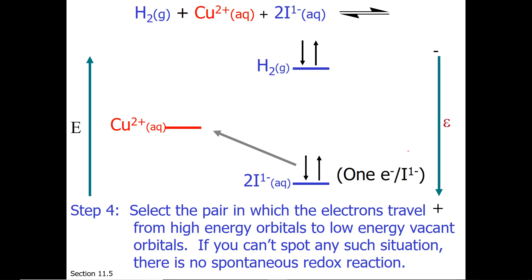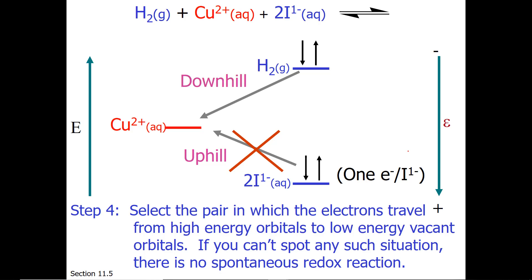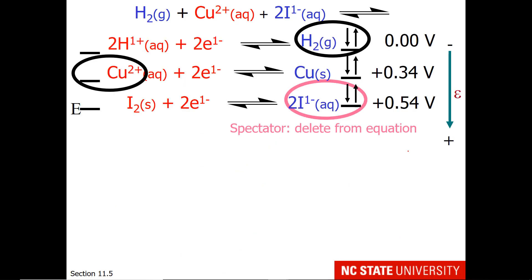Do the electrons from iodide want to jump uphill to copper-2+? No, that would be non-spontaneous — it's uphill. Do the electrons belonging to hydrogen want to fall downhill and get closer to the nucleus by transferring to copper-2+? Yes. So I'm going to remove iodide from the equation. We are writing net redox reactions, so we only write things that participate in the reaction.